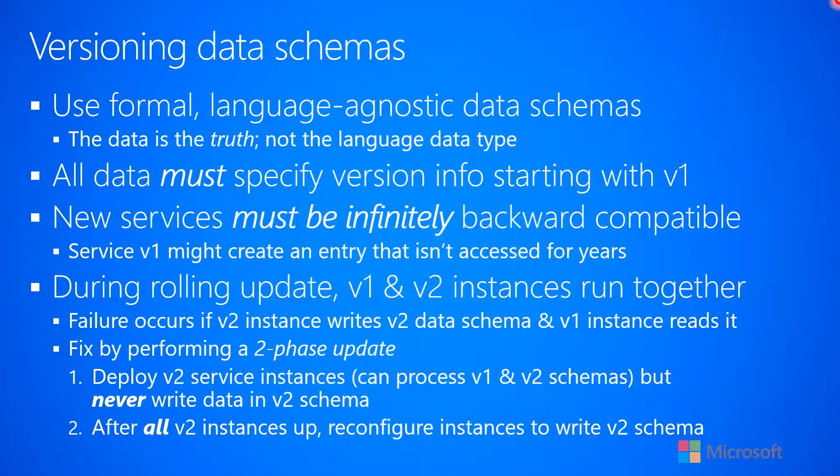Earlier in this course I talked about how you can version the code for your services, and I also talked about updating the protocol that your services use between version 1 and version 2, and I talked about this thing called a two-phase update. A similar thing has to happen when you are versioning data schemas — not just wire protocols, but now data schemas. Let's talk about that.